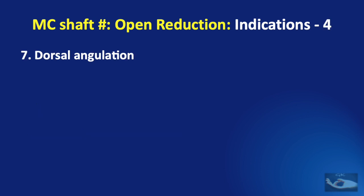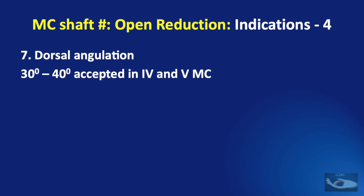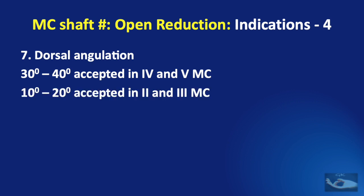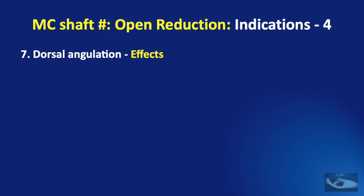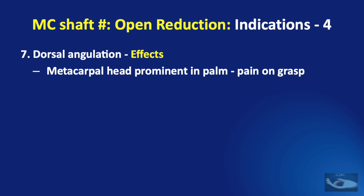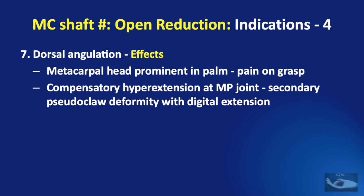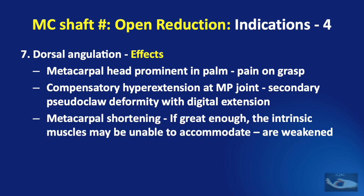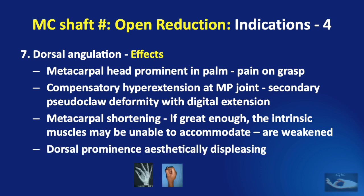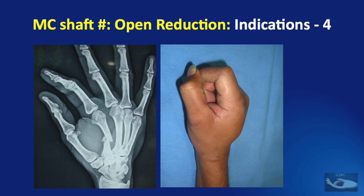Dorsal angulation is a fairly constant finding in metacarpal shaft fractures. About 30 to 40 degrees of angulation can be accepted in the 4th and 5th metacarpal shaft fractures, but only 10 to 20 degrees can be accepted in the 2nd and 3rd metacarpal shaft fractures. Even within these acceptable levels, some effects may warrant open reduction: the metacarpal head may be prominent in the palm causing pain on grasp; there may be compensatory hyperextension at the metacarpophalangeal joint with a secondary pseudoclaw deformity; the intrinsic muscles may be weakened; and the dorsal prominence may be aesthetically displeasing.